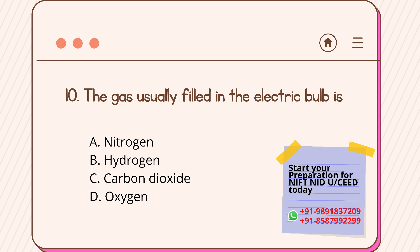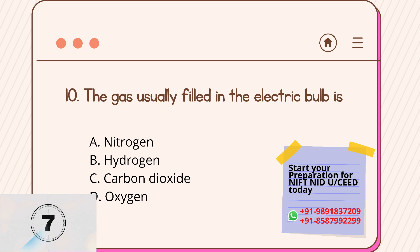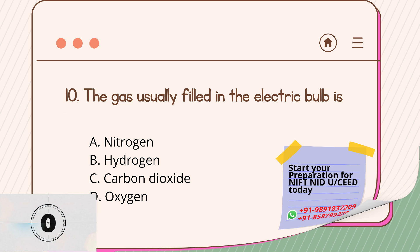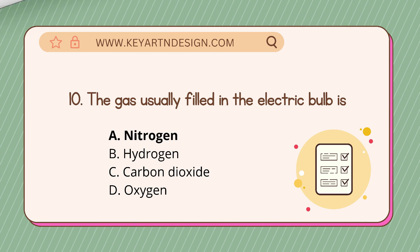Question number ten: which gas is usually filled in the electric bulb? Option A: Nitrogen, Option B: Hydrogen, Option C: Carbon dioxide, Option D: Oxygen. The correct answer is Option A, Nitrogen.